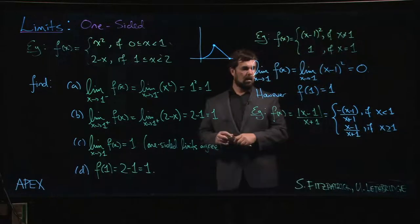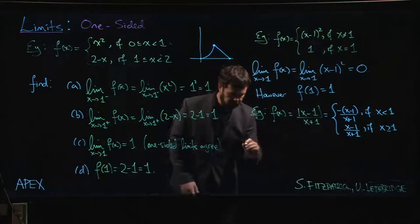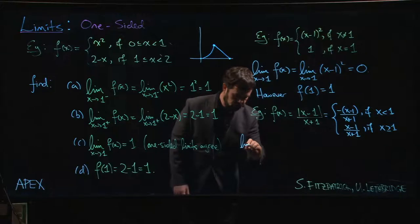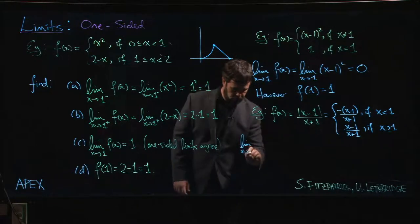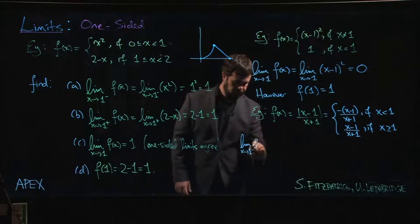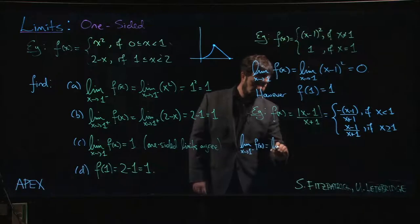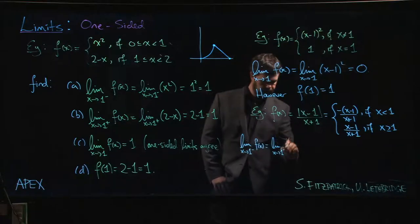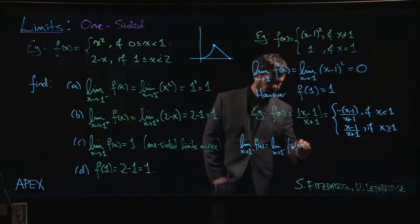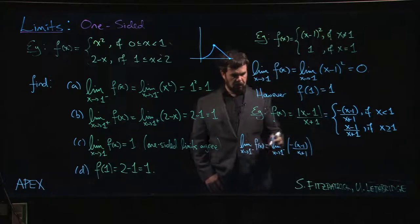So now that we've written this as a piecewise defined function, we can calculate one-sided limits. We can say the limit as x approaches one from the left of f of x is equal to the limit as x approaches one from the left of minus (x minus one) over (x plus one).